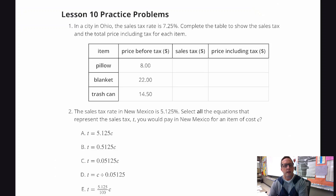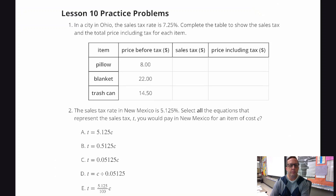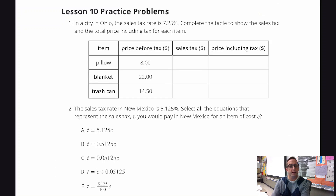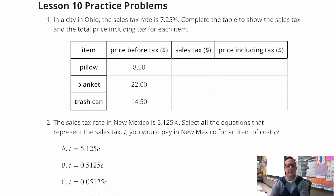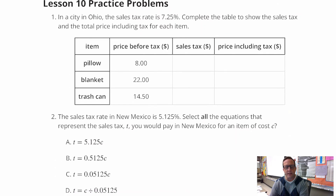We're looking at the lesson 10 practice problems for number one. In a city in Ohio, the sales tax rate is 7.25%. Complete the table to show the sales tax and the total price, including tax, of each item.